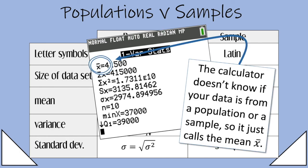So it just calls the mean x bar. But since the formulas are the same, then if your list is a population, then you can use this for mu.